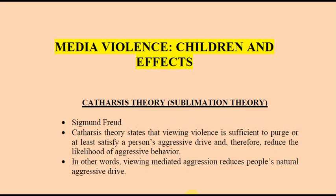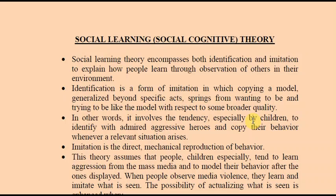If violence is presented as unjustified, it can inhibit the actual expression of aggression through a sense of guilt. Next is Social Learning or Social Cognitive Theory, which encompasses both identification and imitation — explaining how people learn through observation of others in their environment. Identification is a form of imitation where copying a model generalizes beyond specific acts, stemming from wanting to be like the model. People imitate their favorite stars, and children especially tend to identify with admired aggressive heroes and copy their behavior.